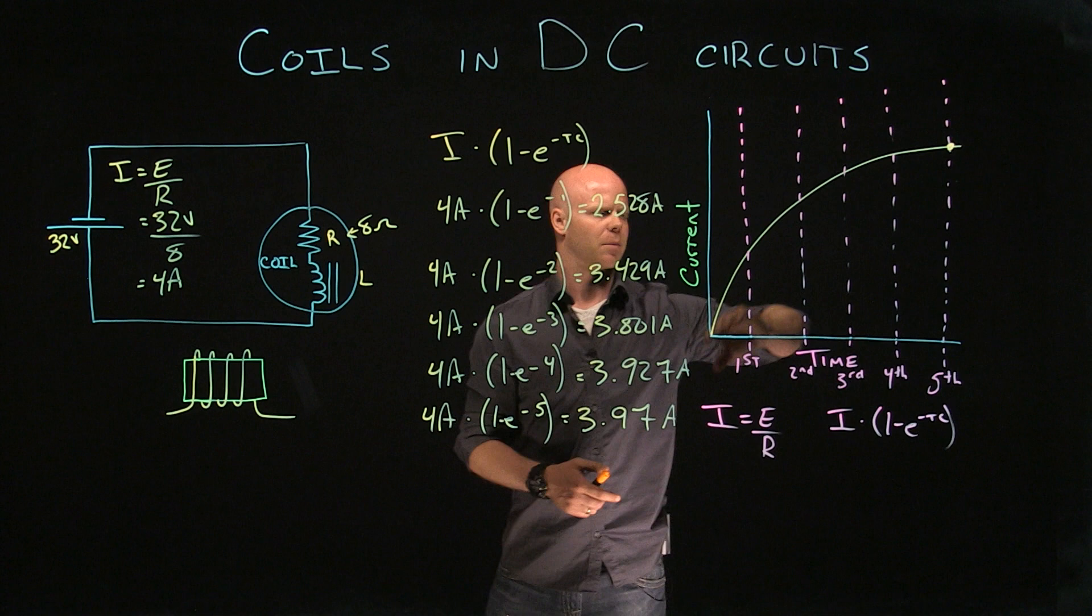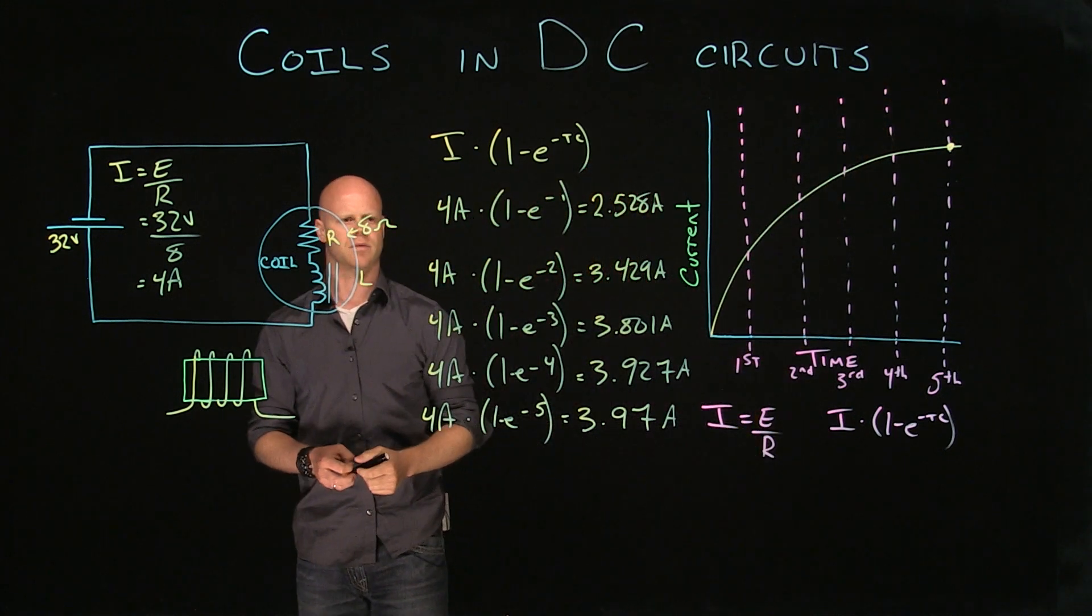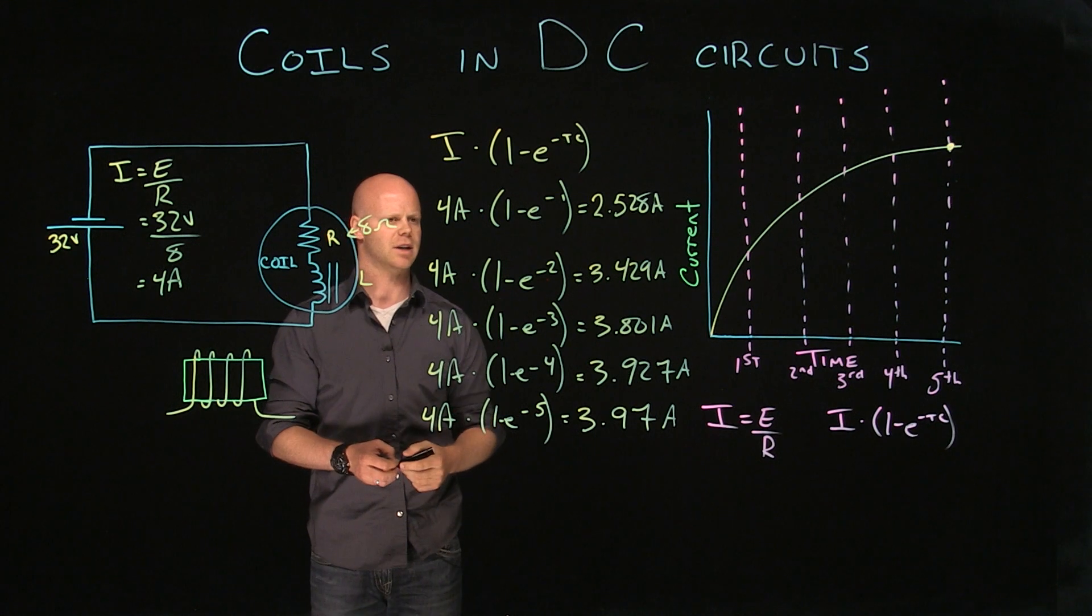What's limiting current from continuing past that point? That's the opposition to current flow. That is its resistance. That's what's limiting current in that circuit.